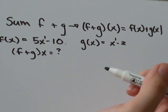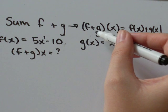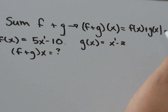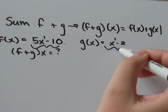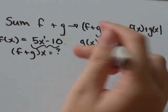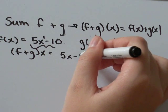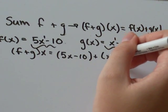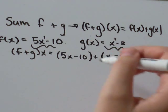Our formula says that when we've got f plus g of x, that's just f of x plus g of x. So take the two functions and add them together. We've got 5x minus 10 plus x minus 2. In this case, I can just drop the brackets.